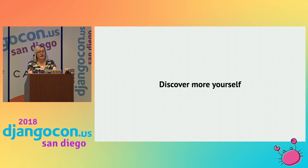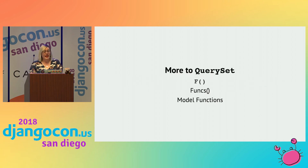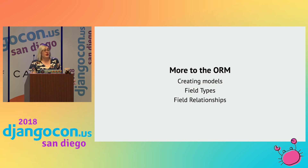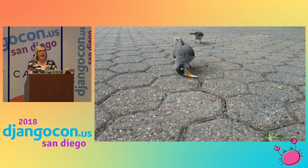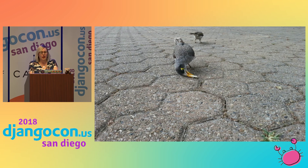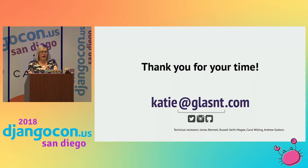And that's my time. Discover more yourself — there's a bunch I didn't cover today, including F objects where you can actually interact with your fields, more functions, how to actually create models in the first place, and the types you can have and the relationships between them. Hopefully this will help you go scout and find bugs. And be reminded that even if you've worked in any other kind of tech stack or any other kind of industry before, you have skills. You can apply these skills in many ways. You never start from zero — you always build on what you know. Thank you for your time.